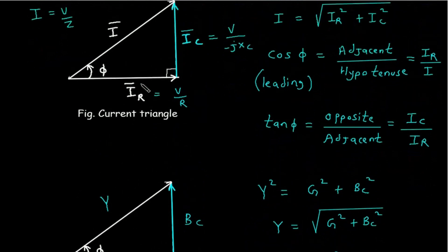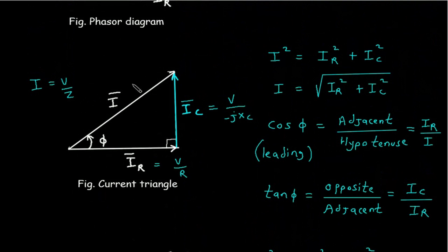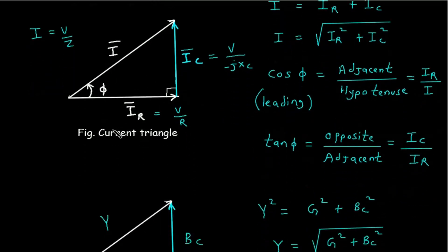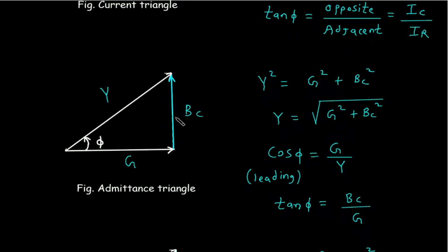From the current triangle we can draw the admittance triangle. If we divide all sides of the current triangle by voltage V, what remains is: 1 by Z (which is admittance Y), 1 by XC (capacitive susceptance BC), and 1 by R (conductance G). This is again a right-angle triangle, so Y squared equals G squared plus BC squared, therefore Y equals the square root of G squared plus BC squared.